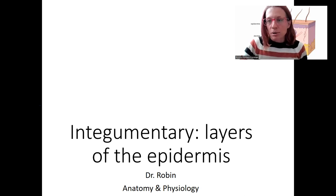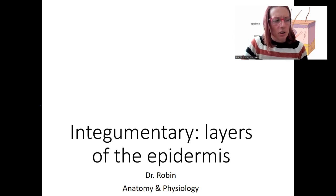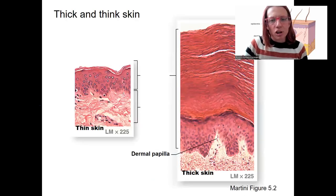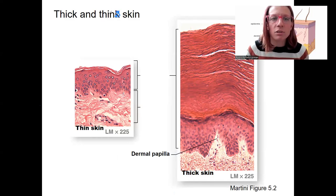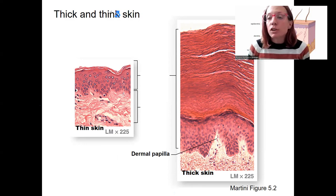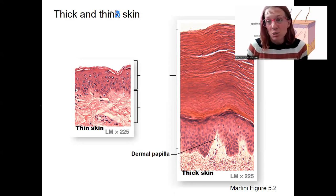The first thing to talk about with the epidermis is the types of epidermis. There are generally two types: thick and thin skin. Most of your body is actually covered in thin skin — the epidermis itself is very thin.